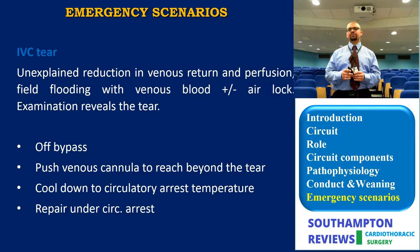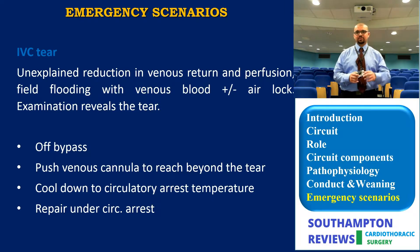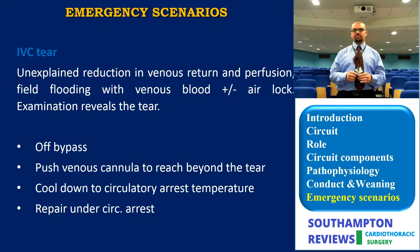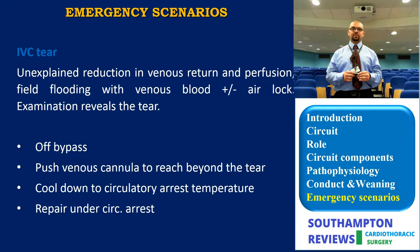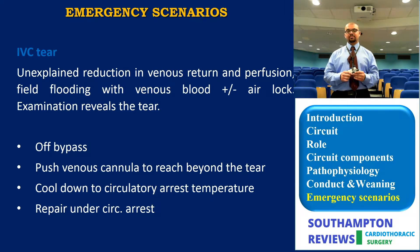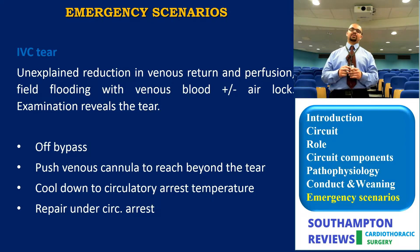For IVC tear - you will find it through unexplained reduction in venous return, reduced perfusion, flooding with venous blood, and on examination finding the cannula out, an airlock, or the tear itself. First step again is off bypass. Push the venous cannula to reach beyond the tear, cool down the circulation to achieve circulatory arrest, and then repair it.